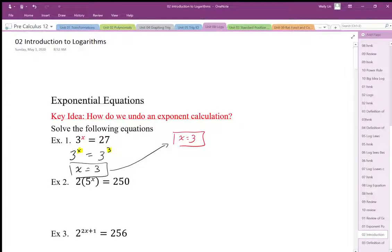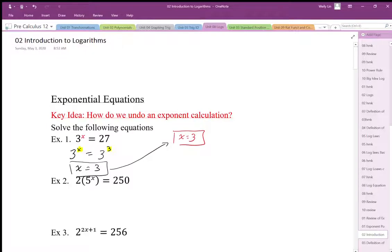So we can kind of undo the exponent that way. We can do it kind of less formally, knowing our math facts. We could also do it a little bit more formally by showing that the common base can exist, and we can make the exponents equal to each other.